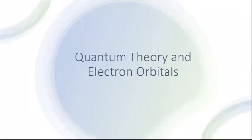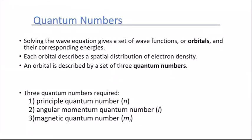In this video, we'll look at quantum theory and the electron orbitals. When we first start looking at the electron orbitals, we need to look at what the quantum numbers are. When we solve the Schrödinger wave equation, that gives us a set of wave functions, or orbitals, and their corresponding energies. Each orbital describes a space that the electron can be in — the most probable location of the electron in that atom.